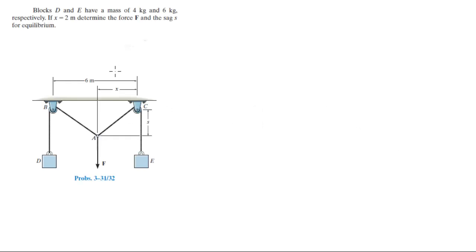For more videos visit ForTheSakeOfEducation.com. Alright guys, let's do this problem where it says block D and E have a mass of 4 kg and 6 kg each. If x is equal to 2, so this is 2 meters, find the force F and the sag S for equilibrium.